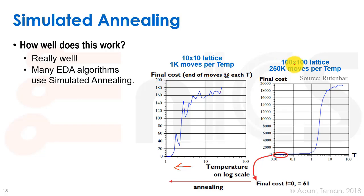We can see that it works at a much bigger lattice too. We have a hundred by hundred lattice, and here we have 250,000 moves per temperature. We get something here that's very interesting - it's called an S-curve. You see this S shape we always get.